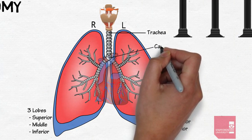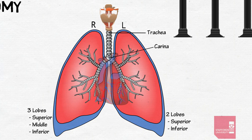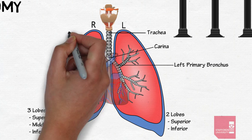The trachea then divides at a structure called the carina, which is around the level of the fifth intercostal space, and becomes the left and right primary bronchi.